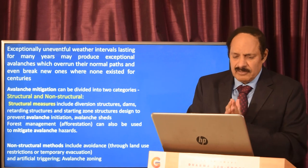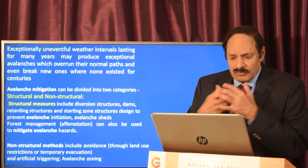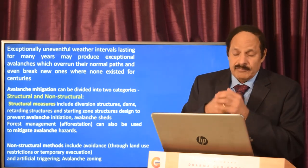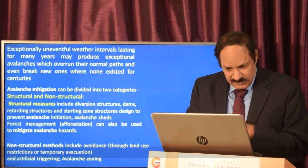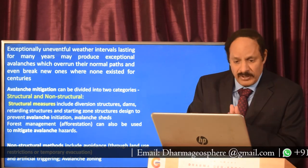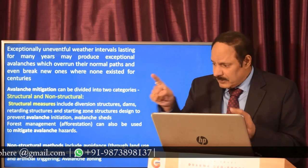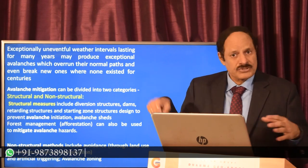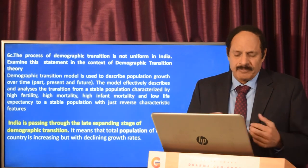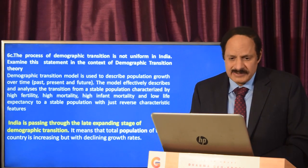Mitigation measures involve both structural and non-structural approaches. Structural measures include diversion structures, dams, retarding structures, and starting-zone structures to prevent avalanche initiation, as well as avalanche sheds. Forest management through afforestation can also mitigate avalanche hazards. Non-structural methods include avoidance through land-use restrictions or temporary evacuation, artificial trickling, and avalanche zoning similar to what is done in earthquake prevention.